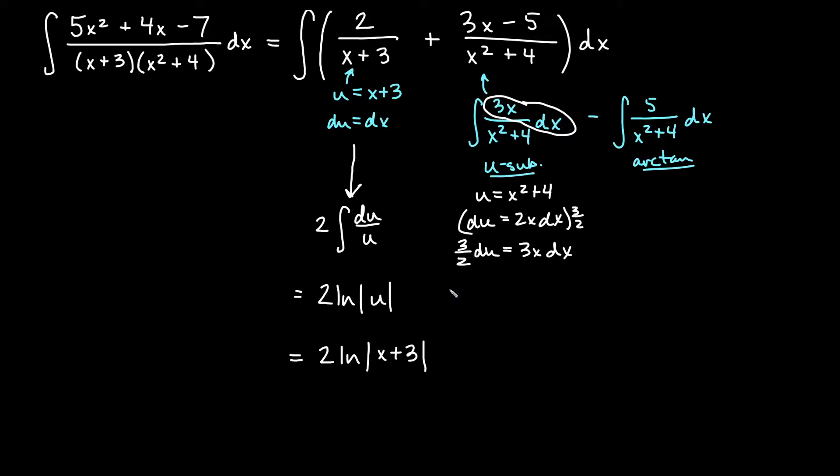It's 3 halves du, so I will get 3 halves integral du over u. So that will be 3 halves ln of absolute value of u, which is x squared plus 4.